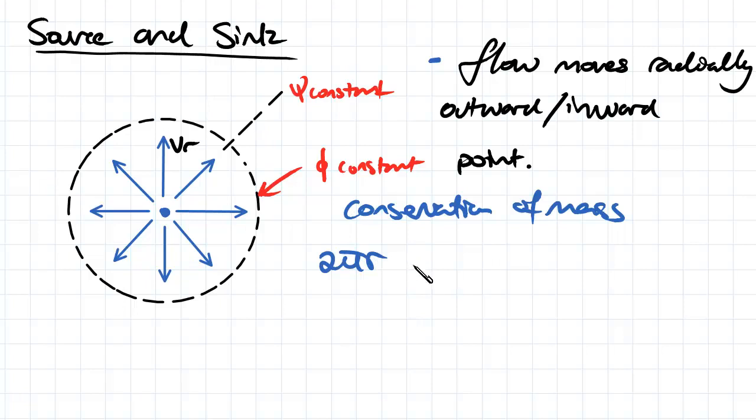We take that and multiply by the radial velocity at that point, which is going to be equal to m, the volume rate of flow emitting from that line. From that we can rearrange to get Vr = m/(2πr).